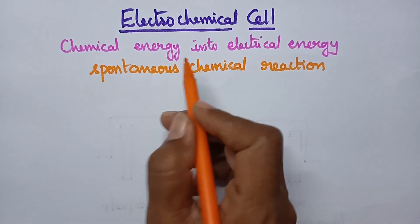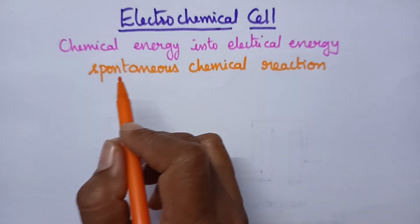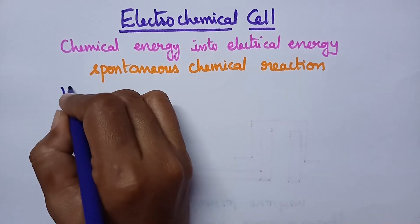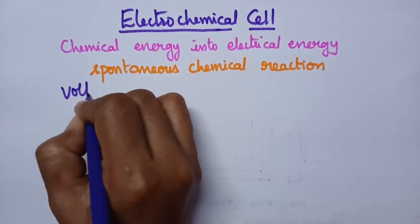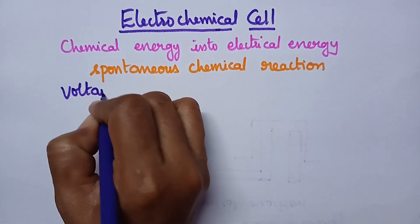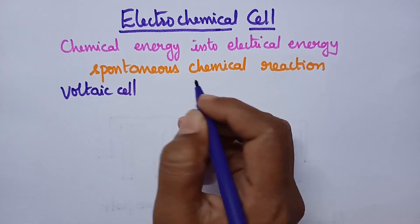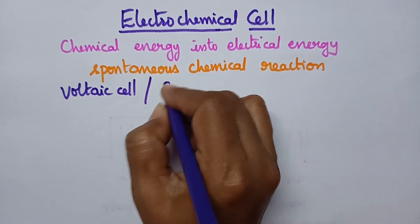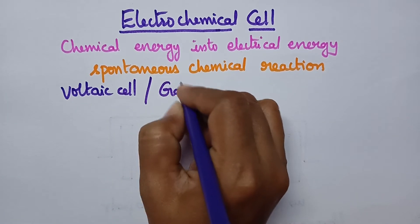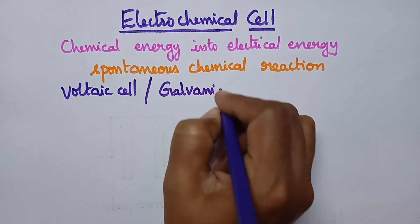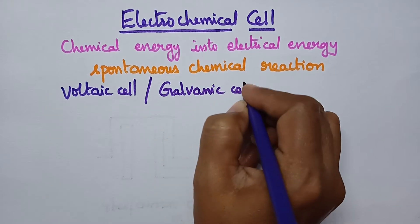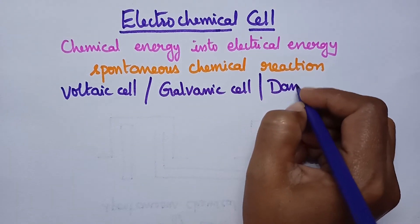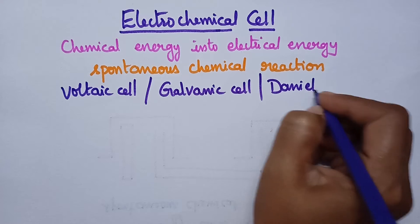The electrochemical cell is also known as a voltaic cell. A good example of an electrochemical cell is the galvanic cell, which is also known as the Daniel cell.